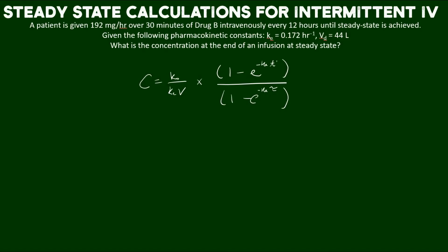On the right side of the equation we have what I've covered in another video called the multiple dosing factor, specifically in the form for steady state. This includes one minus the exponential of the negative elimination rate constant times t prime, which is the infusion time, over one minus e to the negative elimination rate times tau, which is the dosing interval. So let's go ahead and plug in the variables.